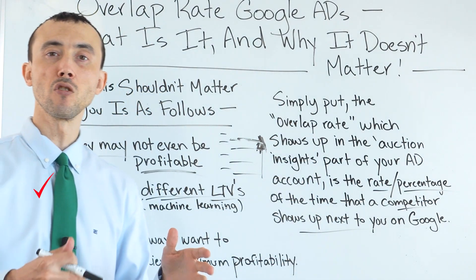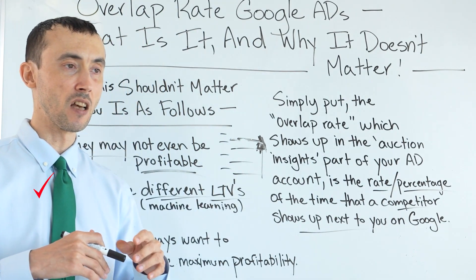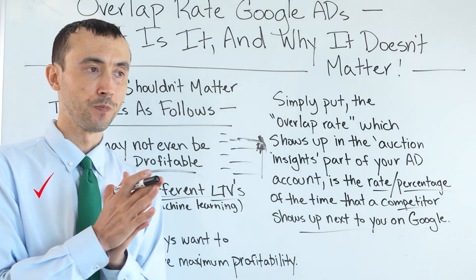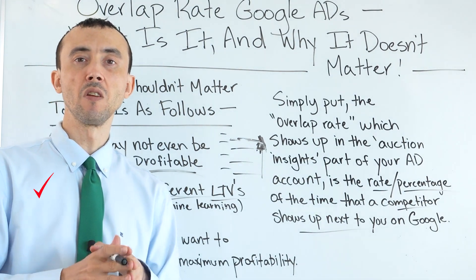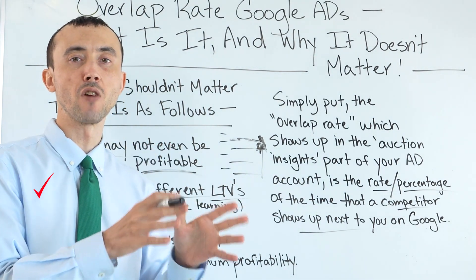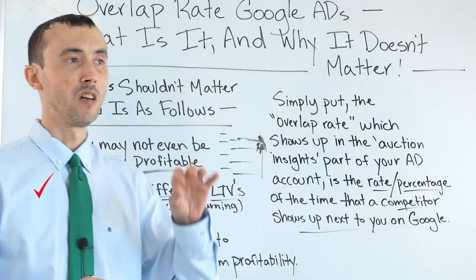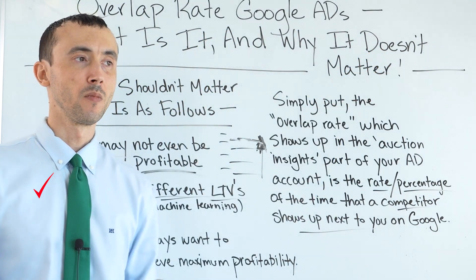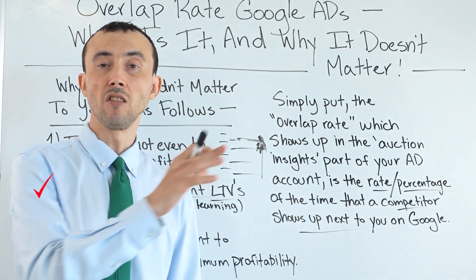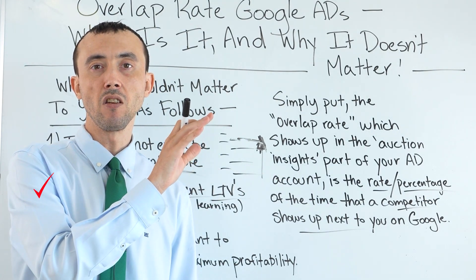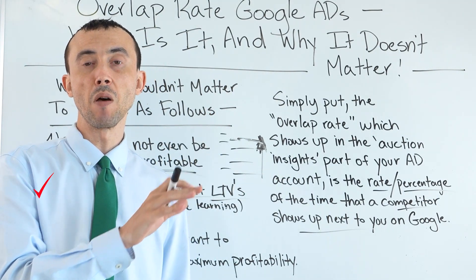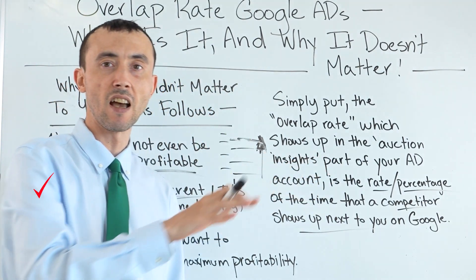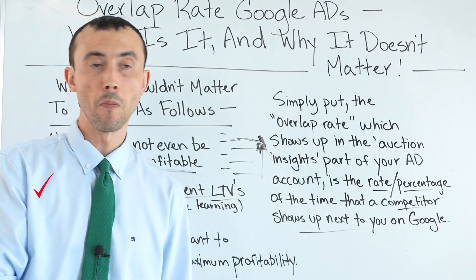That's where proper conversion tracking setup comes into play — using your conversion tracking data inside your ad account to tell Google the amount of return you need. You specify where you can get that return, and say: just run my ads in these exact instances, and that's it.